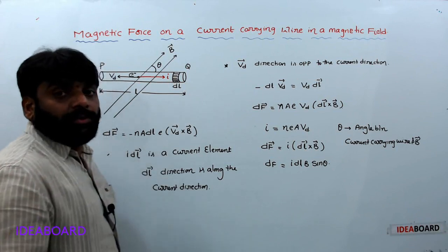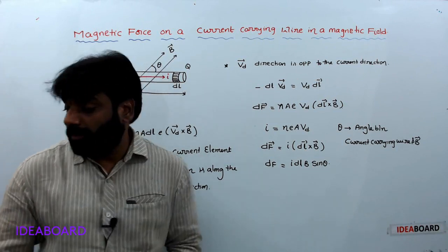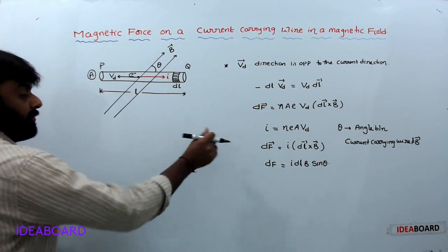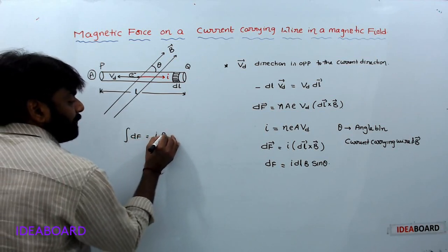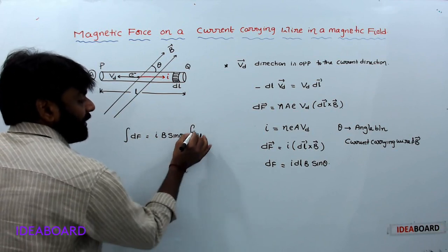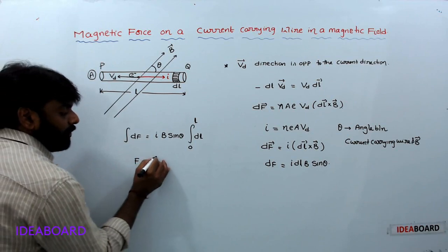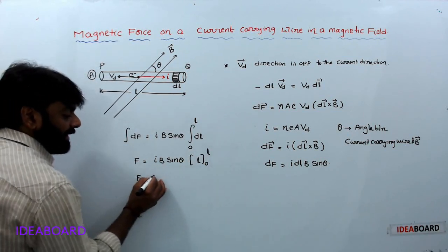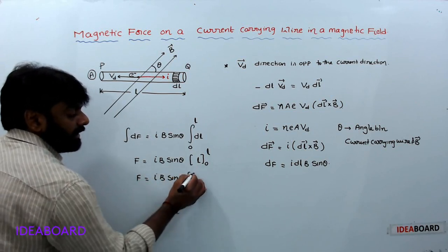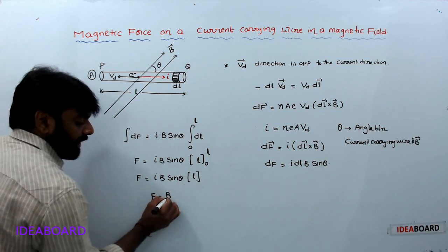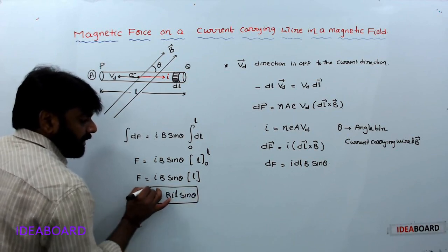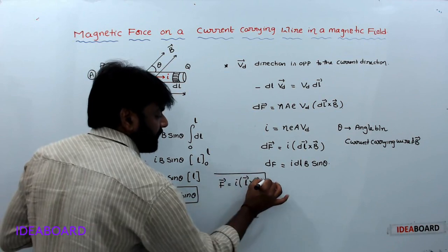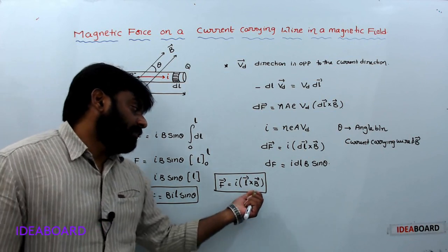For this small element dF = I·dL·B·sinθ. To get the total force, integrate both sides. Since I, B, and sinθ are constants, integrating dL from 0 to L gives F = BIL·sinθ. The vector notation is F = I into L cross B.